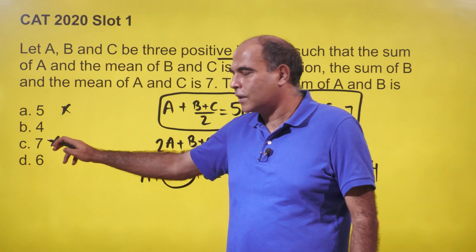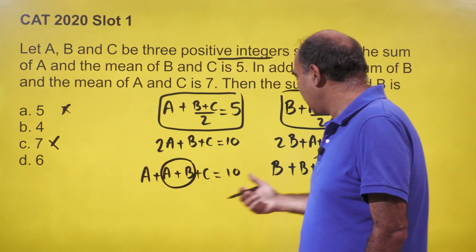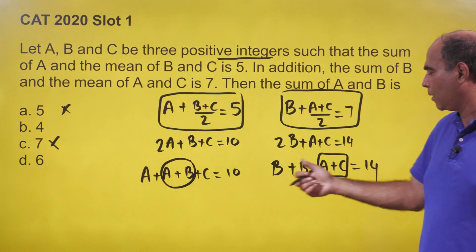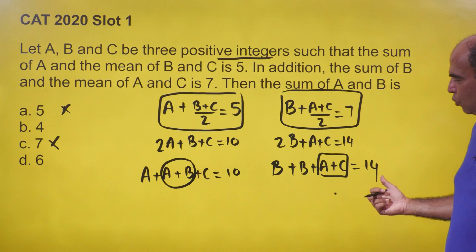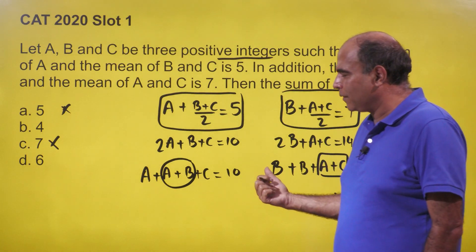Based on the same logic, I can reject the option of 7. If A + B = 7, then A + C = 3, which gives 2B = 11, so B = 5.5, which is not possible.